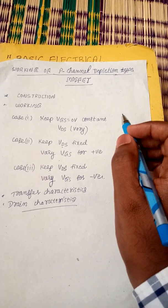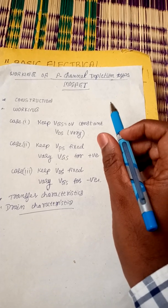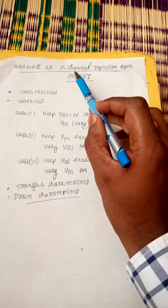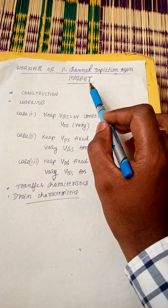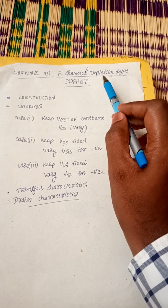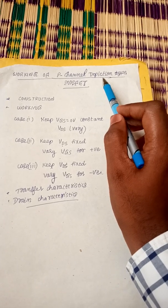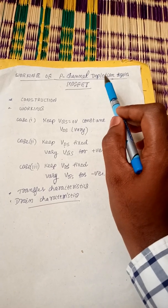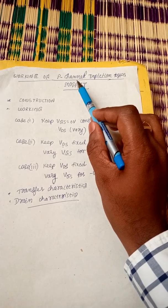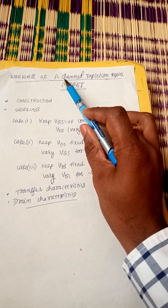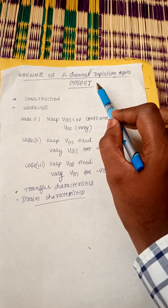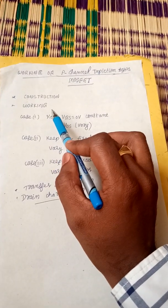Good morning. Today's class we are going to discuss the working of P-channel depletion type MOSFET. Depletion type means there is a pre-existing channel, and this device works under both depletion mode and enhancement mode. The channel is made up of P-type material, therefore it is called P-channel depletion type MOSFET.